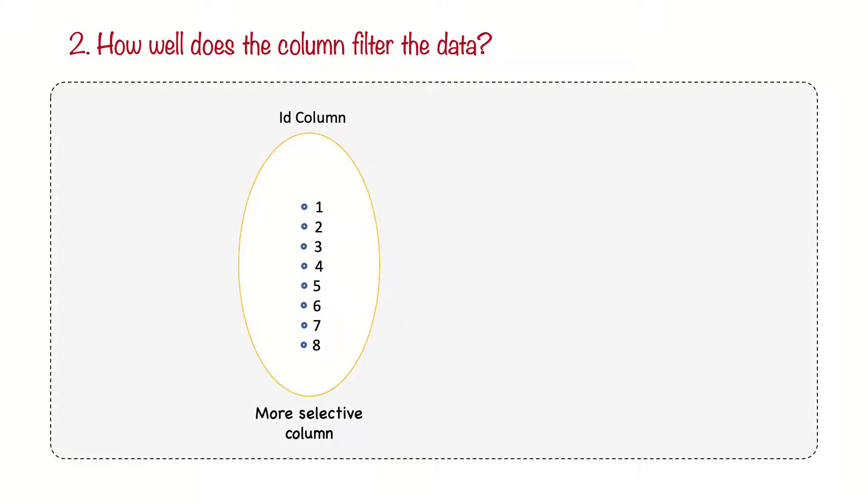The second thing we should consider regarding the order of multi-column indexes, is how well does the column filter the data? Normally, we should add the most selective column first. In short, the more distinct values a column has, the more selective the column is. By adding the most selective column first, we will narrow down more quickly the number of rows.